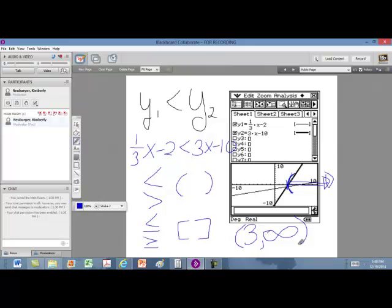Basically, you can just look at it, find the intersection, which is right here, and then determine which side your y1 is less than the y2 or below the y2.